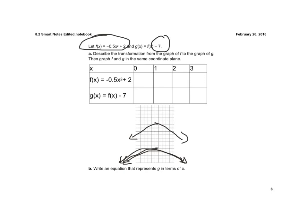So it says then graph f and g, and we did that. Write the equation that represents g in terms of x. So now, g(x) would actually equal -0.5x² - 5, because the vertex is down at (0, -5). For everything else, it stays the same. All they did was shift the graph down 7 units.